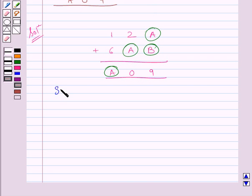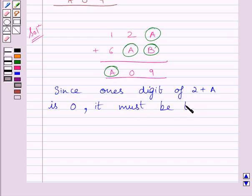We can write, since one digit of 2 plus A is 0, it must be that A is equal to 8 in tens column.